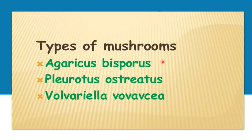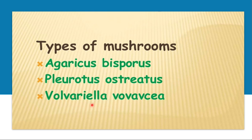Agaricus bisporus is commonly called the button mushroom — remember, both start with B. Pleurotus ostreatus is called the oyster mushroom — both start with O, so you can link them. The remaining one, Volvariella volvacae, is the padistraw mushroom — both start with P. So to summarize: Agaricus bisporus is the button mushroom, Pleurotus ostreatus is the oyster mushroom, and Volvariella volvacae is the padistraw mushroom. Don't get confused by the species names.